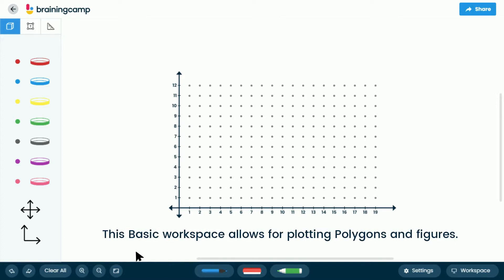This basic workspace allows for plotting polygons and figures. If you want to graph a line, you can do so in the graphing workspace.